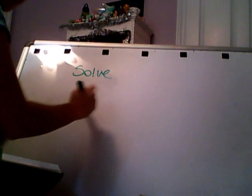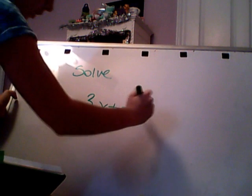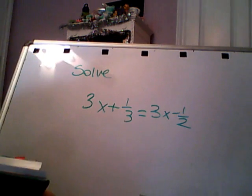We are going to solve for 3x plus one-third equals 3x minus one-half. Okay?